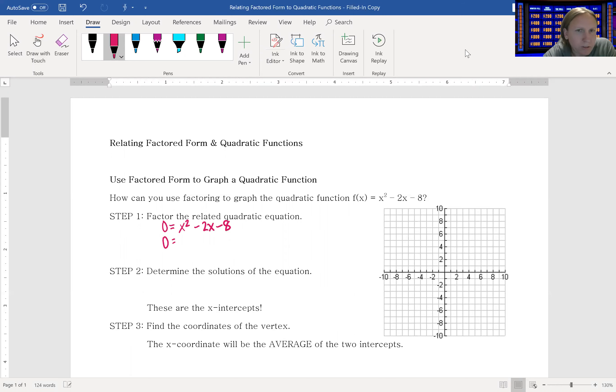So 0 equals, we need two numbers that multiply to -8 and add to -2, so that would be (x - 4) and (x + 2), and now we have factored it.